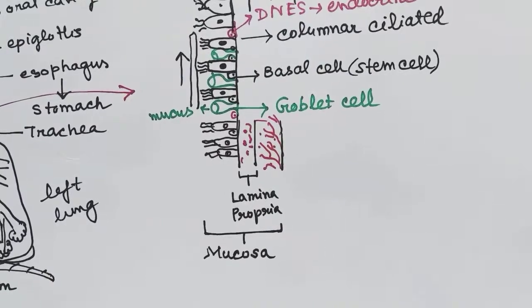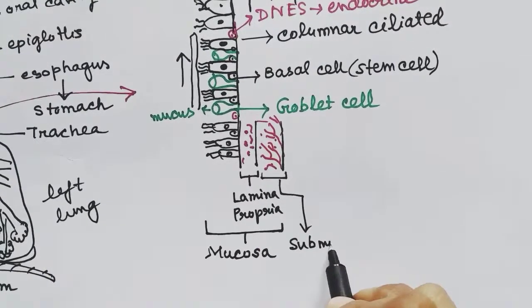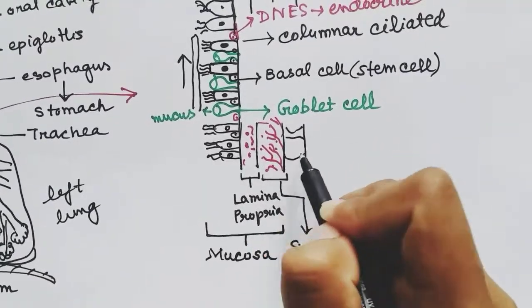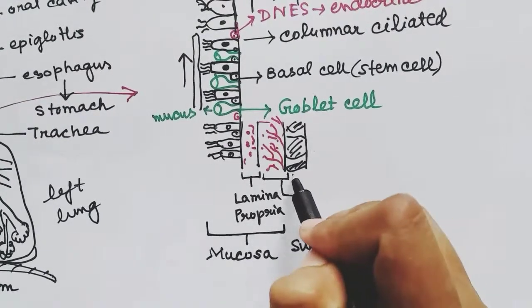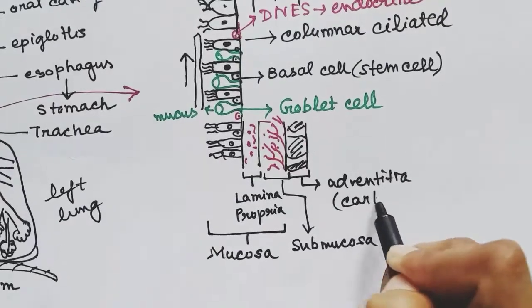Below the submucosa layer, there are the cartilage present. This layer is called adventitia or cartilage layer as cartilage is present in trachea.